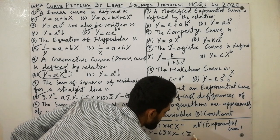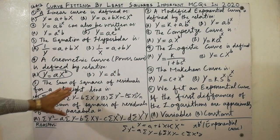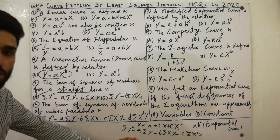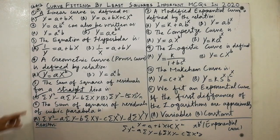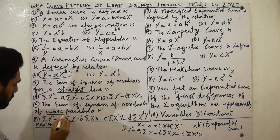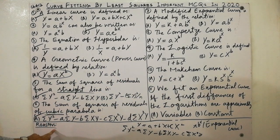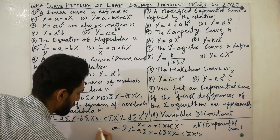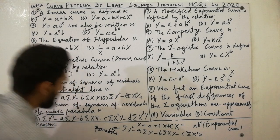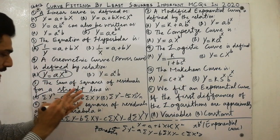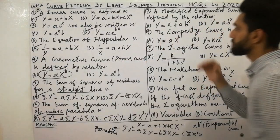The sum of squares of residuals equation applies for a straight line, and another form applies for a second degree parabola. For a cubic parabola, the equation is Σy² minus a·Σy minus b·Σxy minus c·Σx²y minus d·Σx³y. I hope you now have clear concepts on these points.